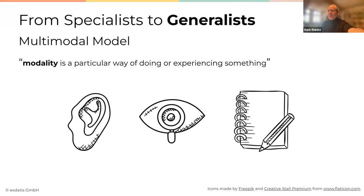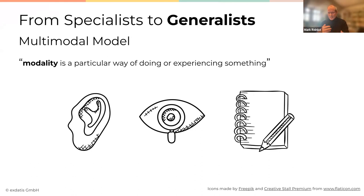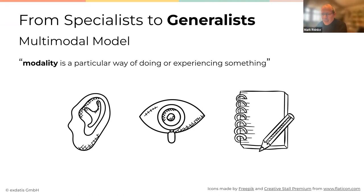This is where multimodal models come into play. Modality is a particular way of doing or experiencing something, and multimodal models combine different modalities — they can take different kinds of inputs. Not only images, not only text, but for example a combination of images and text. In this way they're getting closer to human intelligence, because humans don't perceive things in only one modality — we read, we see, we hear, all at the same time, and process all these perceptions simultaneously.